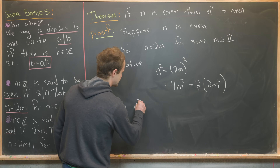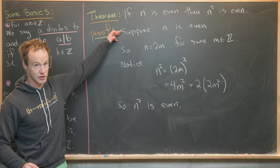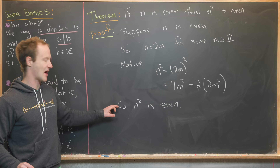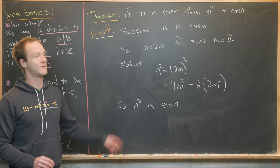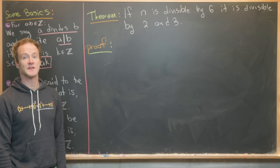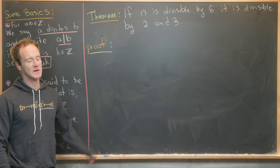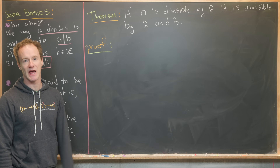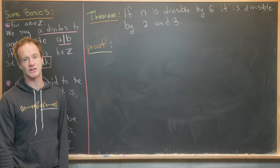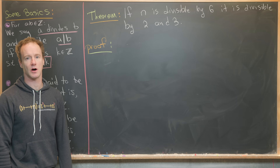So n squared is even. Notice: we started by supposing n is even (P is true), did our calculation including decoding via the definition, and arrived at our Q statement — that's the end of this proof. For the next example, we'll prove: if n is divisible by six, then it is divisible by two and three. Our Q statement here is compound, so we actually need to show two things.